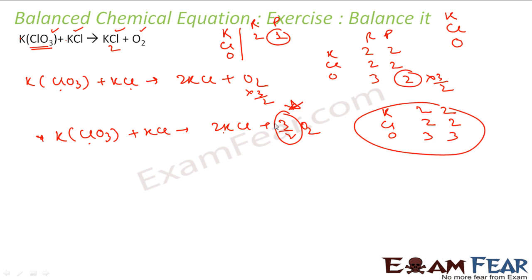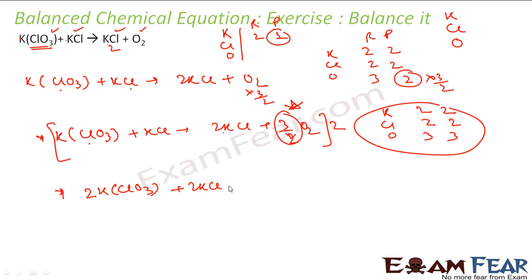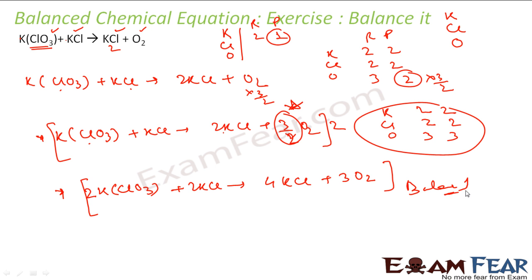Since there is a fraction part, we will remove it. It is divided by 2, so multiply everything by 2. What you get is: 2KClO3 + 2KCl = 4KCl + 3O2. This is my balanced chemical equation.